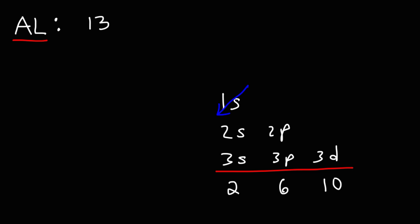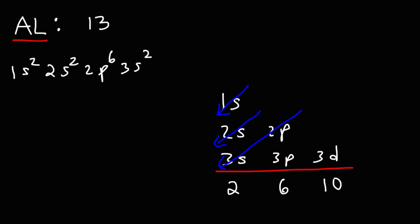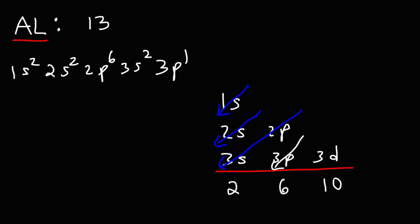We're going to start with 1s2, then 2s2, then 2p6, then 3s2, and then 3p — but we're going to stop at 3p1. Because if we add the exponents, this gives us 13, which is the number of electrons in a neutral atom of aluminum.